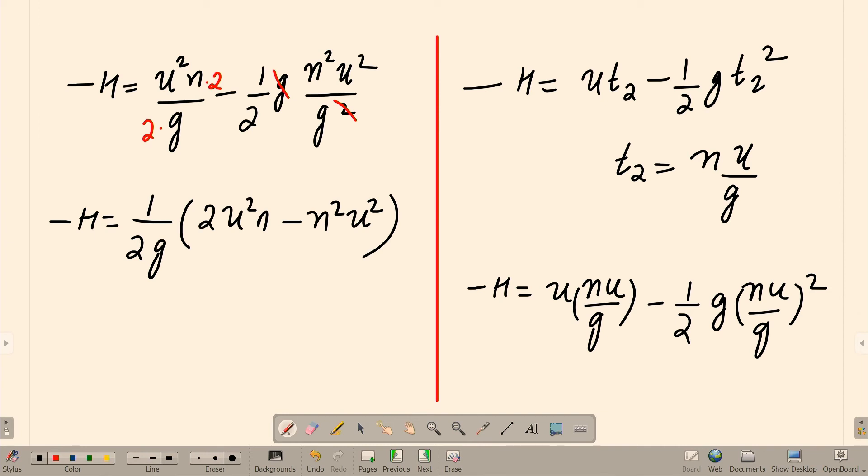I can cross multiply this. Minus H multiplied by 2 G is equal to - here what things we can take common? Here N I can, U square I can, N U square I can take common. If I take N U square, you will get 2 minus N. So here if you operate this negative to this side, 2 G H is equal to N U square into N minus 2, we can say.